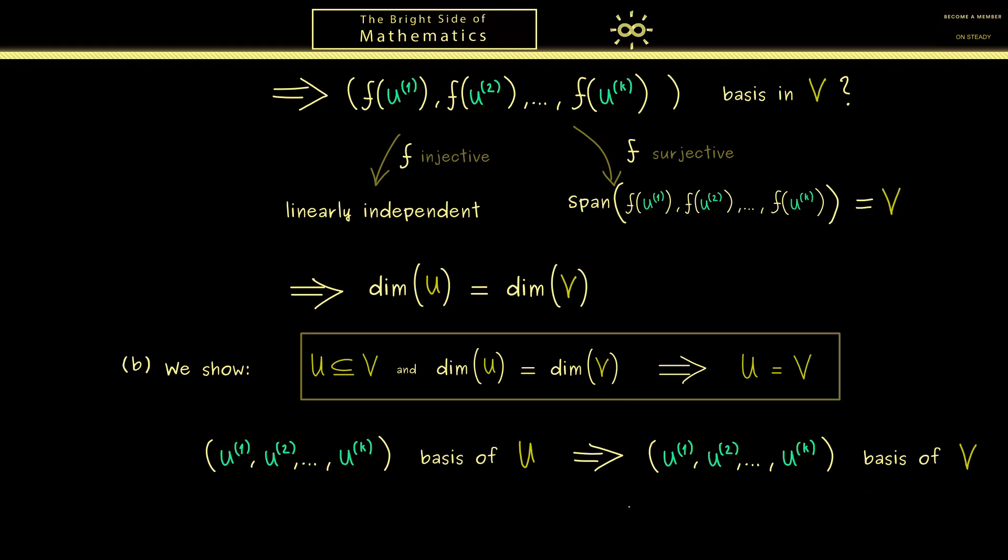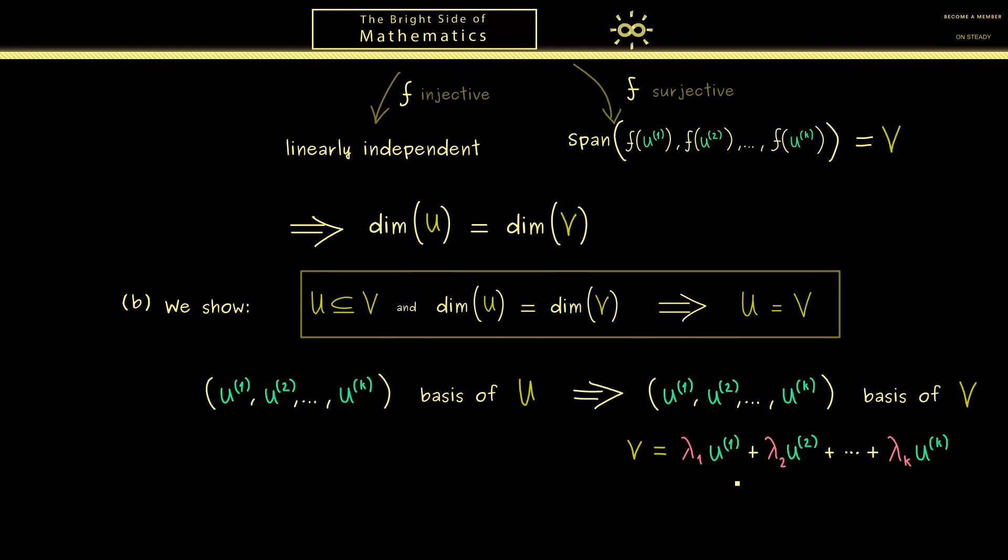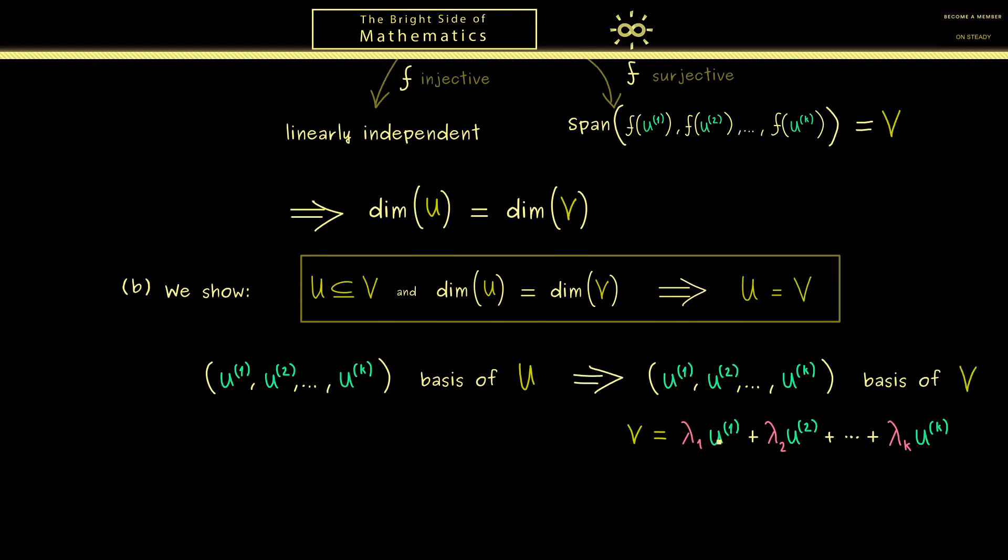This means each vector v in V can be written as a linear combination out of these vectors. However then we know this is a linear combination out of vectors in U and U is also a subspace. Therefore this is also an element in U. Therefore the only correct conclusion we can have here is that U is equal to V. So with this you see our proof is finished and the video for today complete.